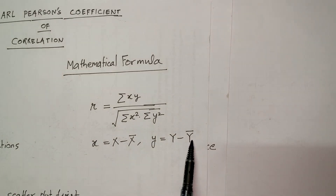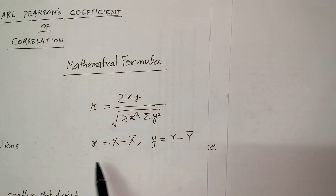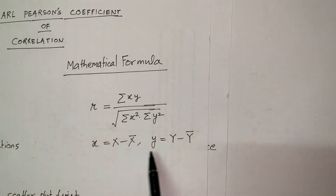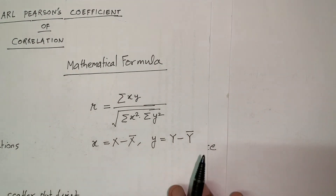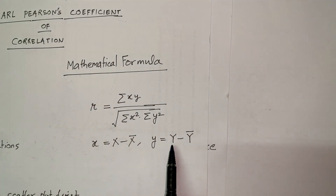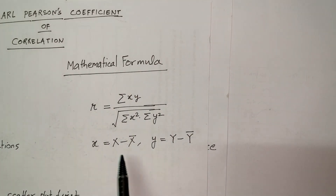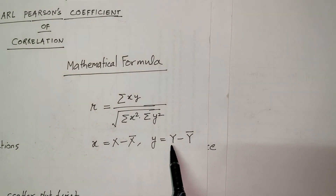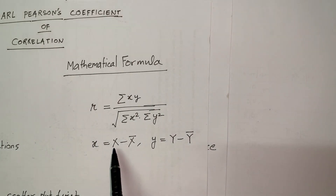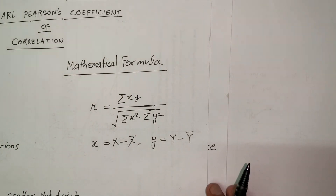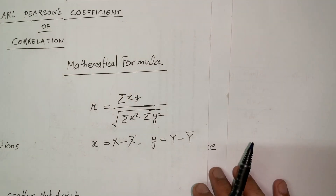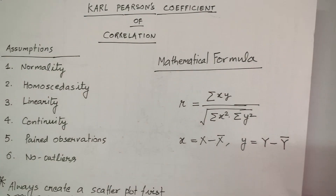Here, small x means capital X minus X̄, and small y means capital Y minus Ȳ. There are two variable series: capital X and capital Y. Capital Y is typically considered the dependent variable. In our example, production of wheat depends on amount of rainfall, so capital Y represents production of wheat and capital X represents amount of rainfall.